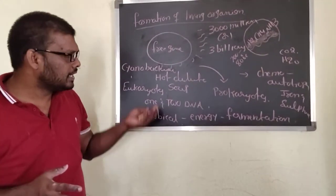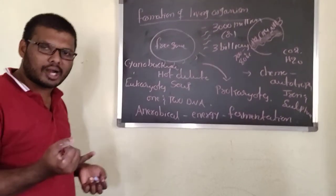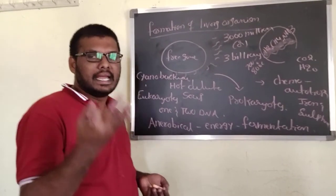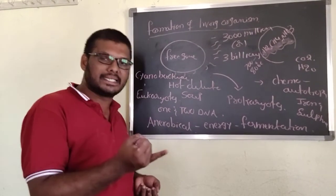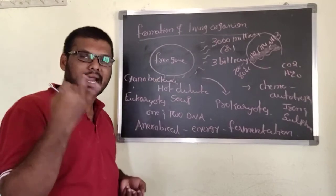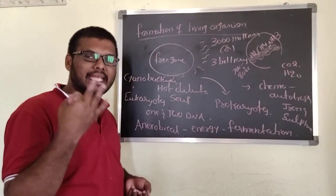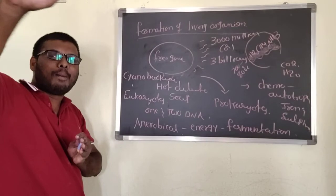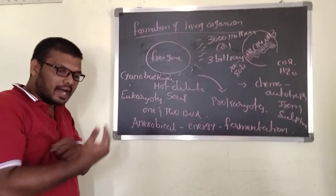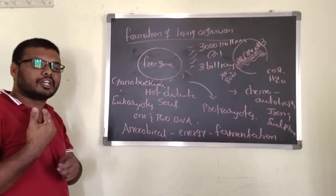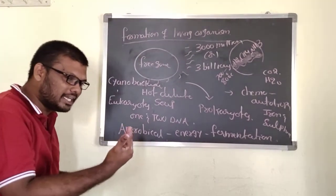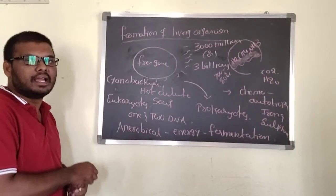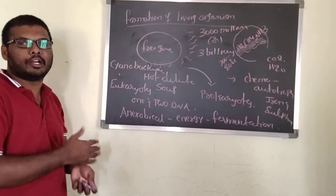In Chordates they have Urochordates, Cephalochordates, and Vertebrates. In Vertebrates we have Pisces, Amphibians, Reptiles, Aves, and Mammals. This is the simple level to complex level — organisms which show so many diversity on the surface of the Earth. Next class we can discuss about the remaining topics.